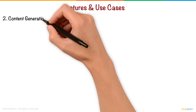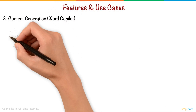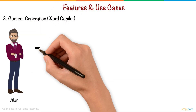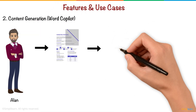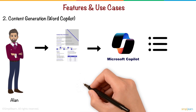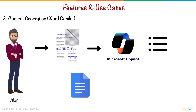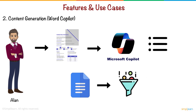Feature 2: Content Generation — Word Copilot. Alan often drafts marketing proposals. He provides Copilot with bullet points, and within seconds, it generates a well-structured document. He refines it instead of writing from scratch, saving hours.